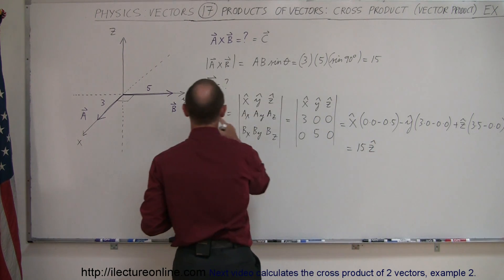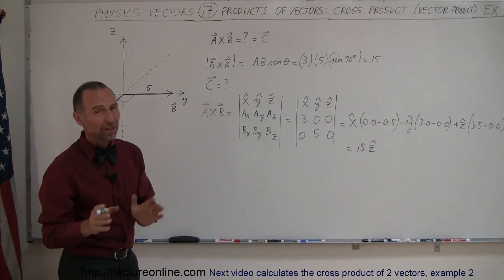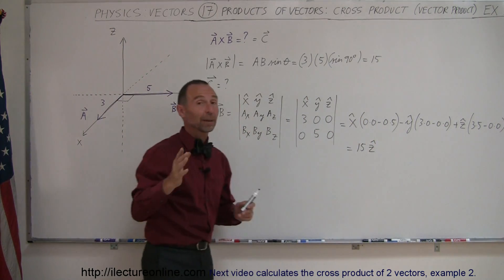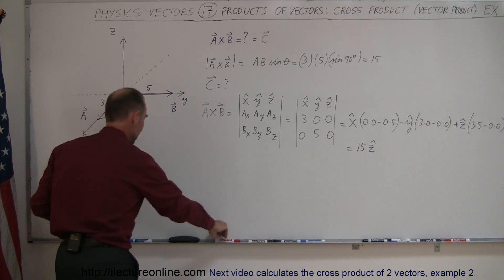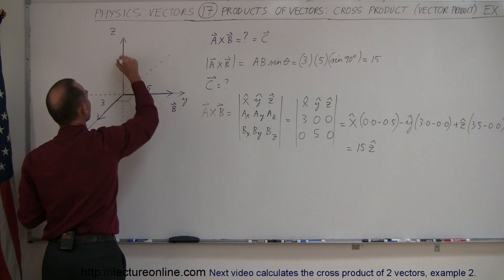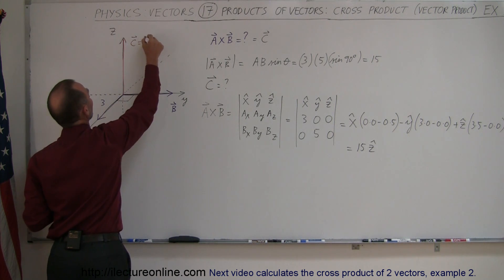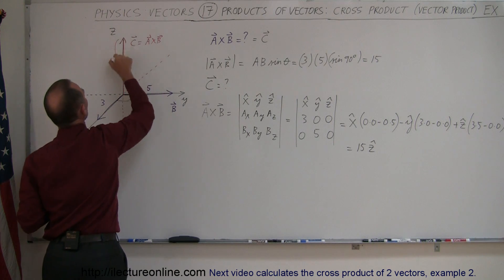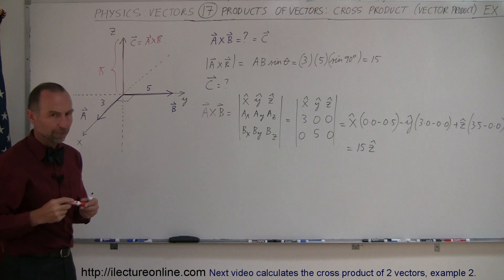The resultant of A cross B is 15 in the z direction — exactly what we expected: a vector with magnitude 15 pointing in the positive z direction.